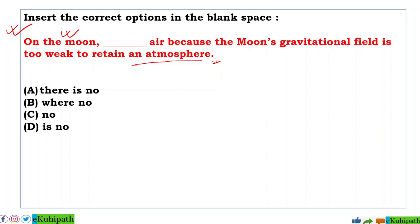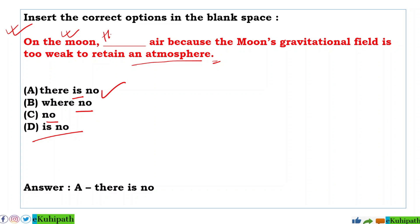I am going to fill the blank space. Option A is 'no', B is 'no', C is 'no', D is 'no'. On the moon, there is no air. Why is there no air on the moon? Because the moon's gravitational field is too weak to retain an atmosphere. So the answer is: there is no.